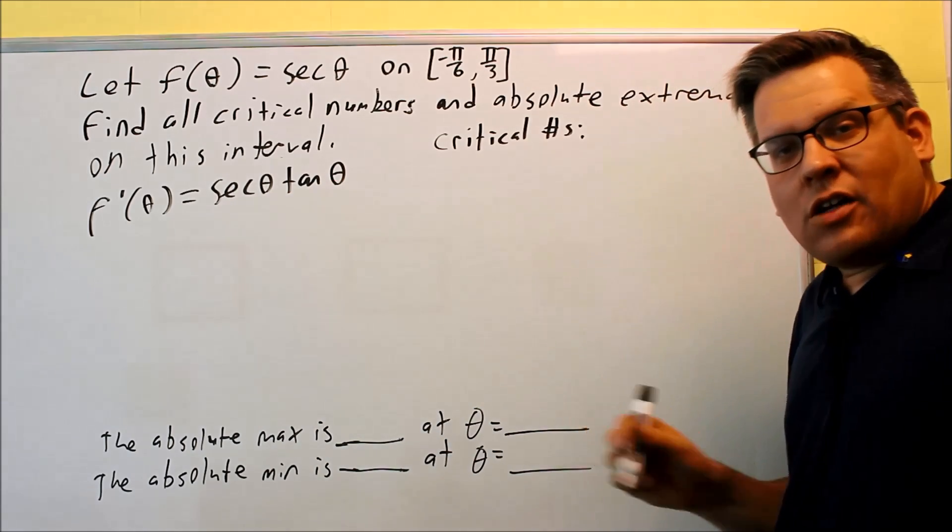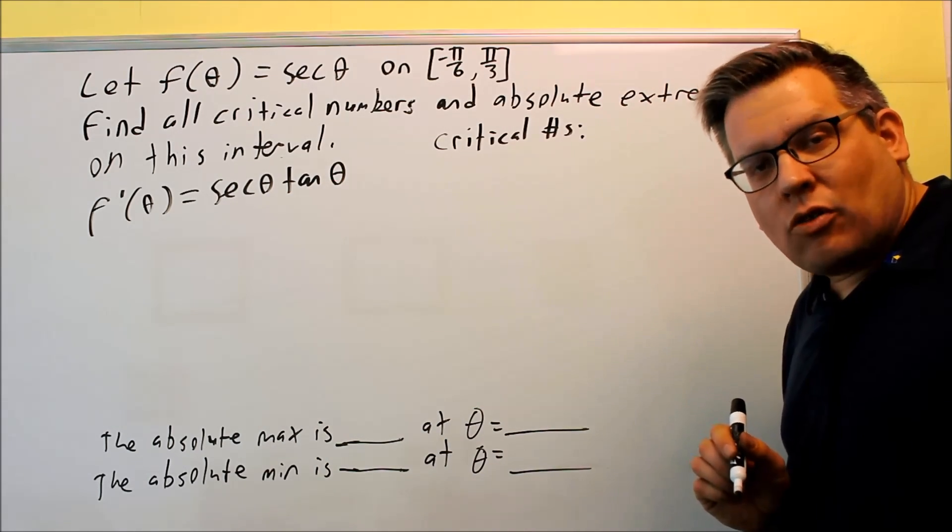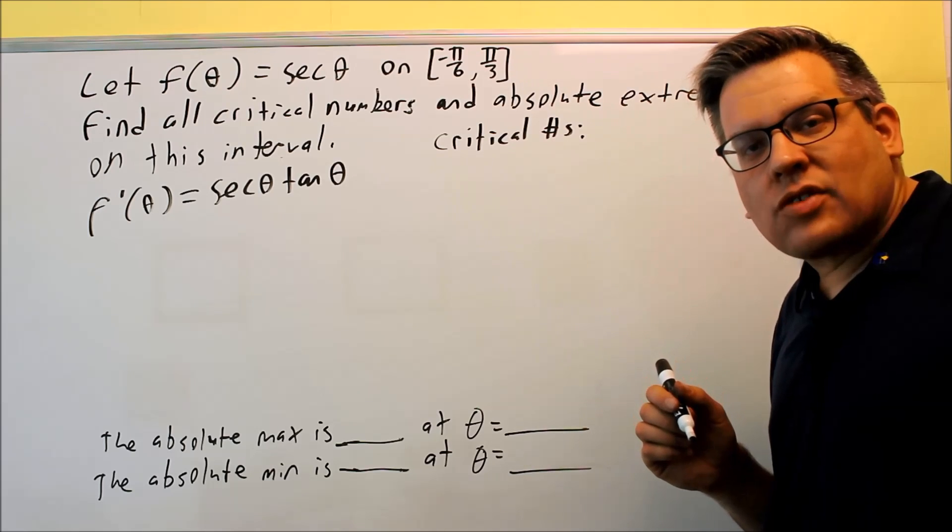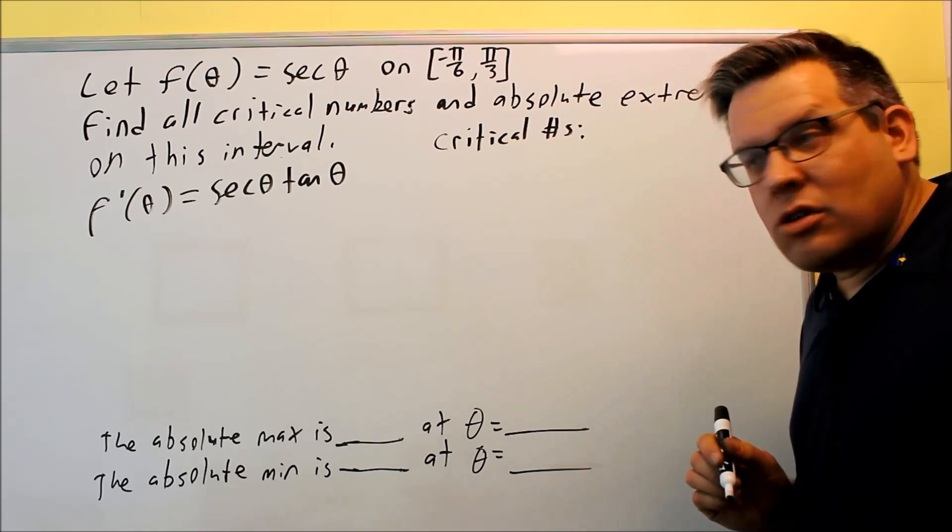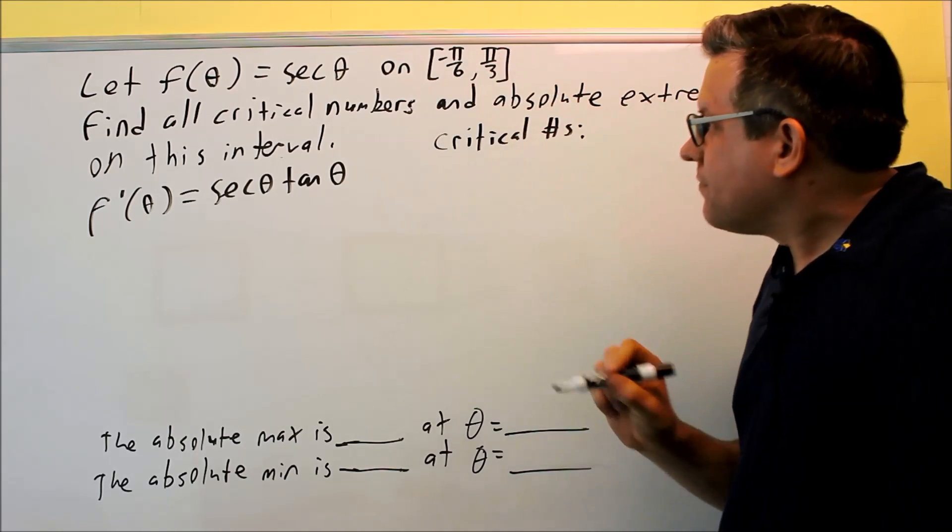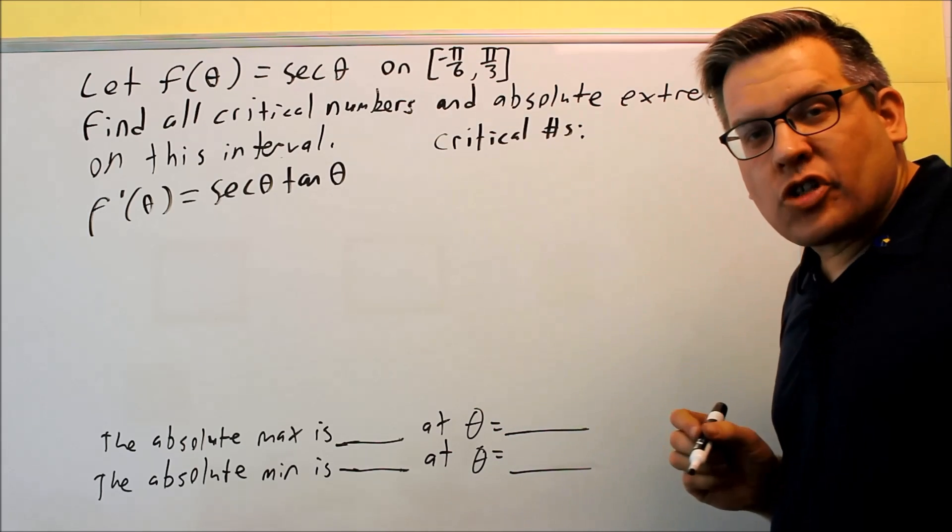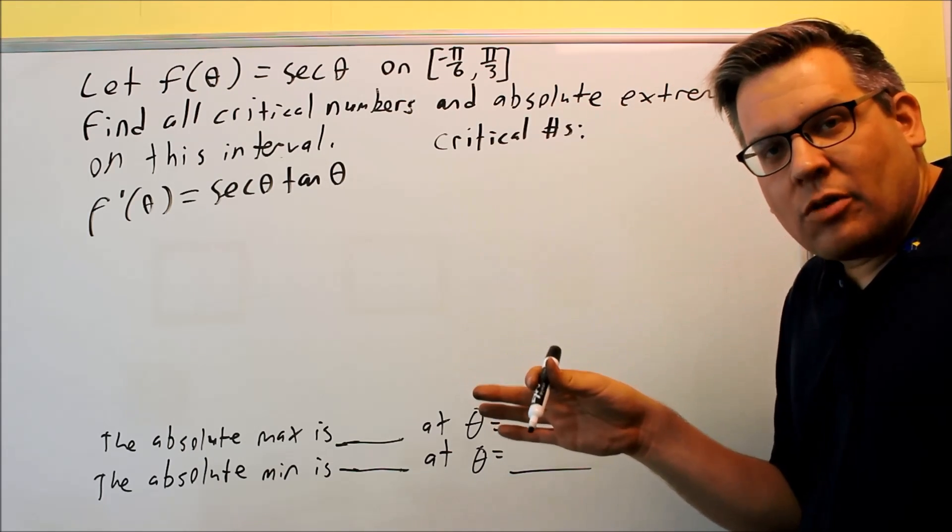So if I take cosine, set it equal to zero, look at my unit circle. The cosine represents the x value on the unit circle, and so that's going to occur at pi over two, which would be the number that would fall in this interval. So the question is, does that mean that pi over two is going to be a critical number? We've got to be careful here.